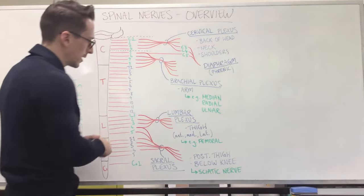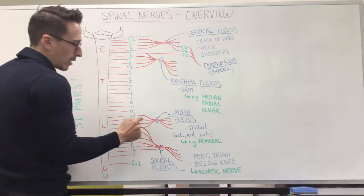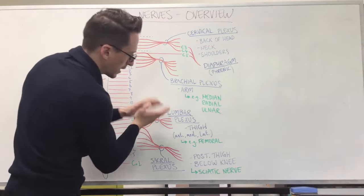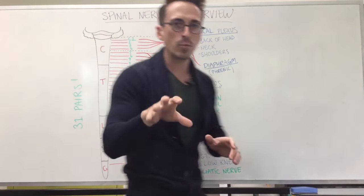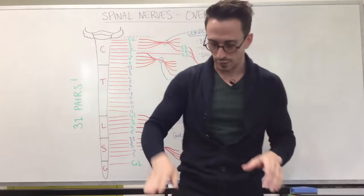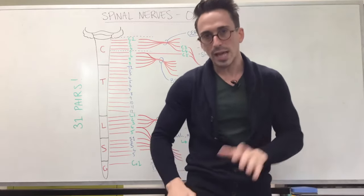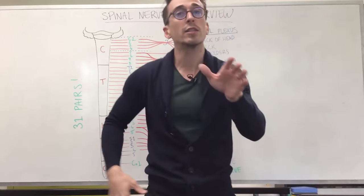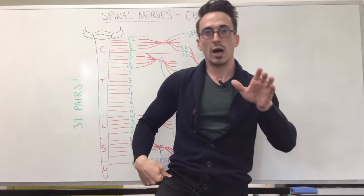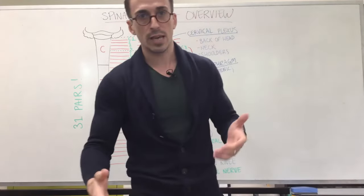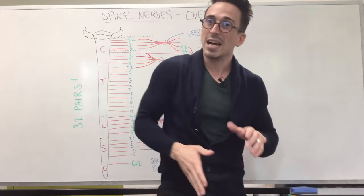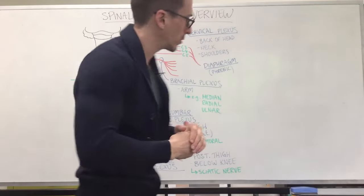Let's have a look at the lumbar plexus. So the lumbar plexus is L1 to L4. Forming this plexus, an important nerve is that of the femoral nerve that shoots out of this lumbar plexus. And the femoral nerve innervates the thigh, specifically the anterior, medial, and some lateral aspects of the thigh. It allows for our thigh to bend, or allows for the leg to bend at the knee. And it innervates, for example, the rectus femoris, the sartorius, and the three vasti muscles of the thigh.